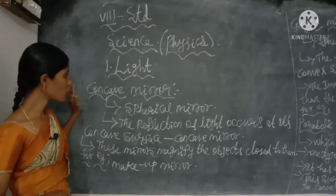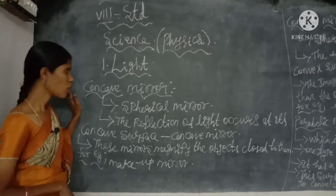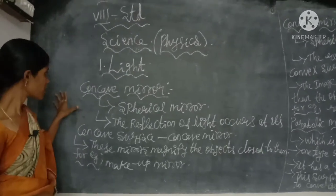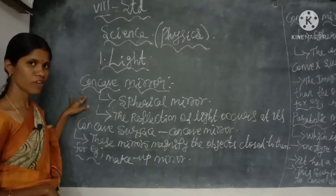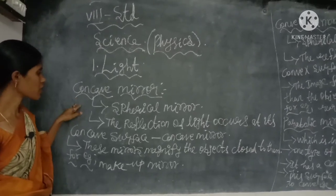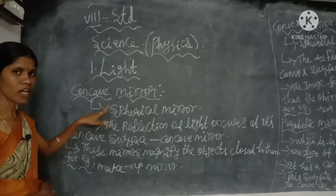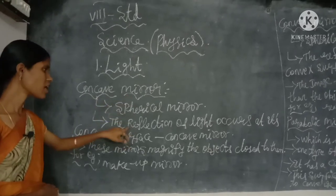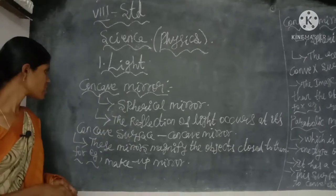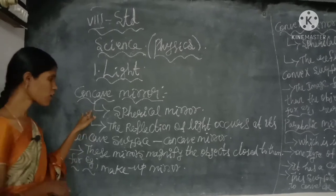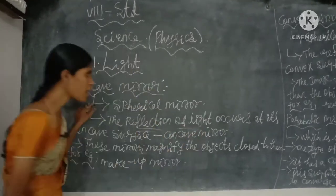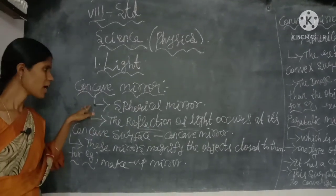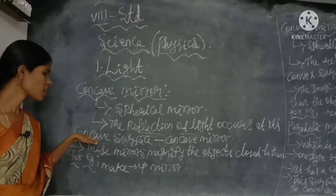First we briefly learned about the spherical mirror. The examples of spherical mirrors are concave mirror and convex mirror. In this class, we will first learn about the concave mirror. Concave mirror is one type of spherical mirror. In the case of a concave mirror, the reflection of light occurs at its concave surface.